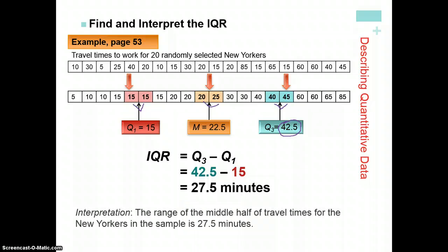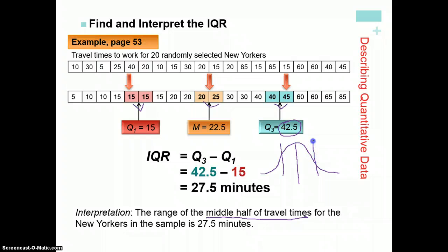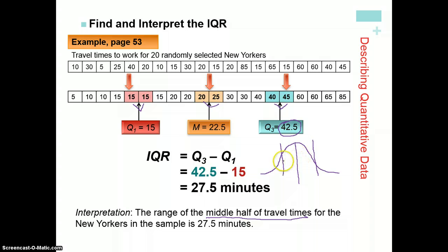And how we interpret this number is the range of the middle half of travel times. So that middle half, let's look at this. Our distribution, a symmetric distribution, our median is the 50th percentile, the midpoint, right in the half. Our first quartile should be about right here, the first quarter, and our third quartile should be about right here. That represents, this is 25%, and this is another 25%, and that represents the middle 50% of our data.